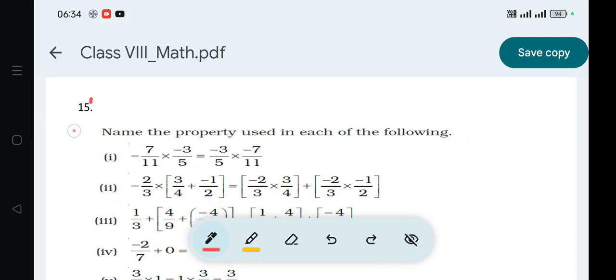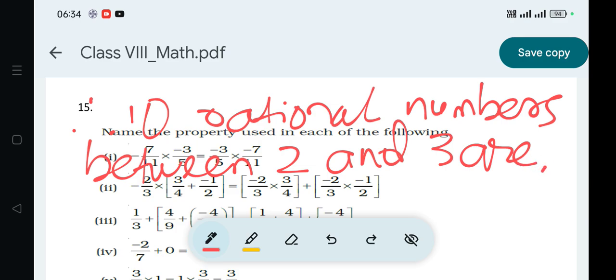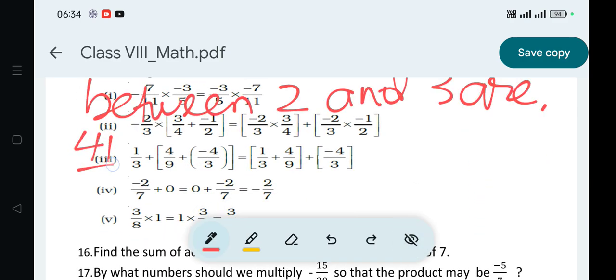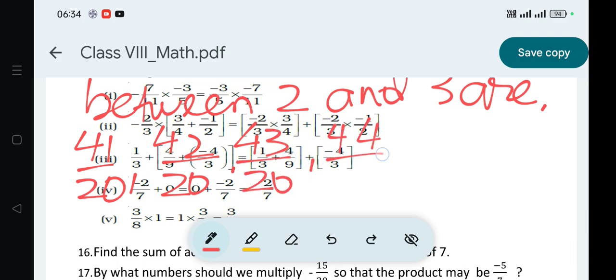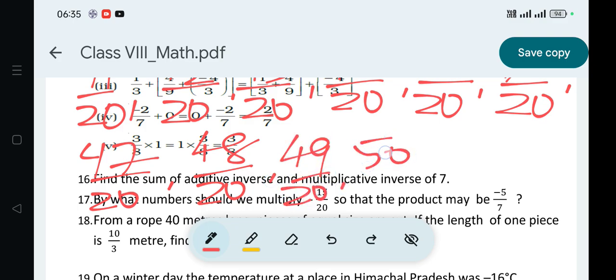So 10 rational numbers between 2 and 3 are: 41 by 20, comma, 42 by 20, 43 by 20, 44 by 20, 45 by 20, comma, 46 by 20, comma, 47 by 20, comma, 48 by 20, comma, 49 by 20, and 50 by 20. These are the 10 numbers, so the question is complete.